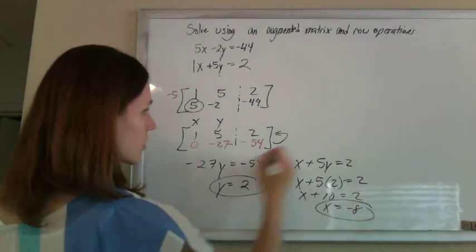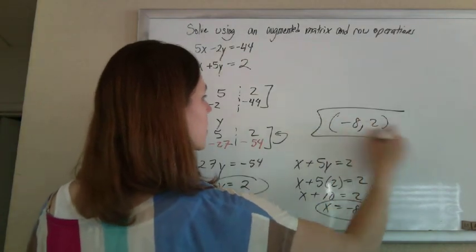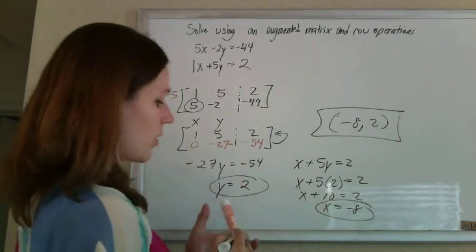So your answer, if you wrote it as an ordered pair, x is negative 8, y is 2. You can plug that back into both of these equations, and it should make both equations true.